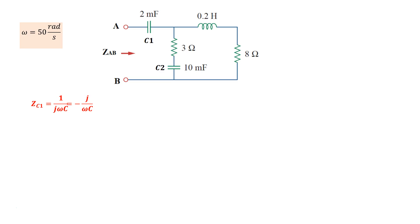Omega is given as 50. Our first c is 2 millifarads, so 2 times 10 to the power minus 3 farads. Using that, we get a -j10 ohm impedance on c1.